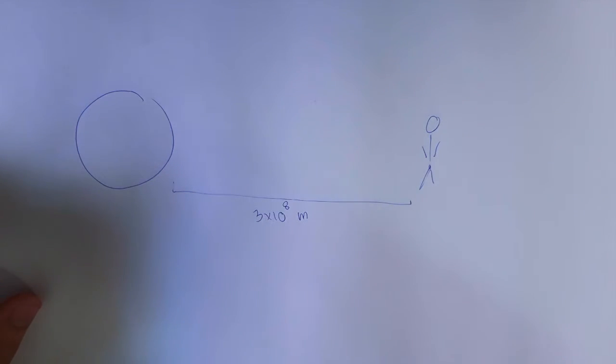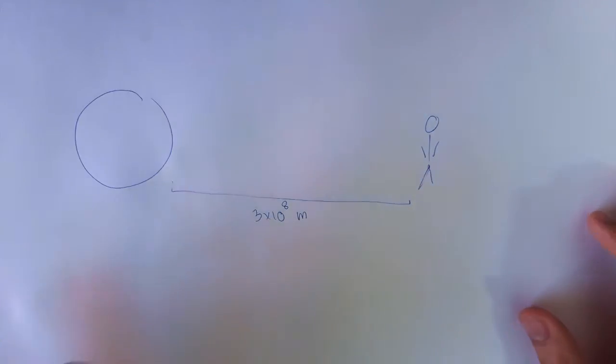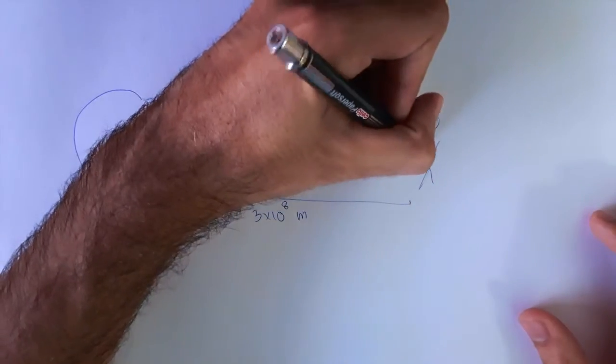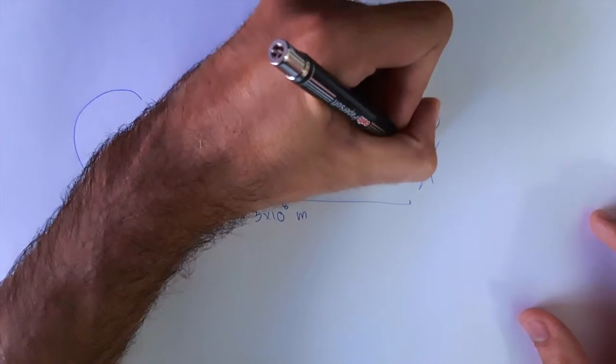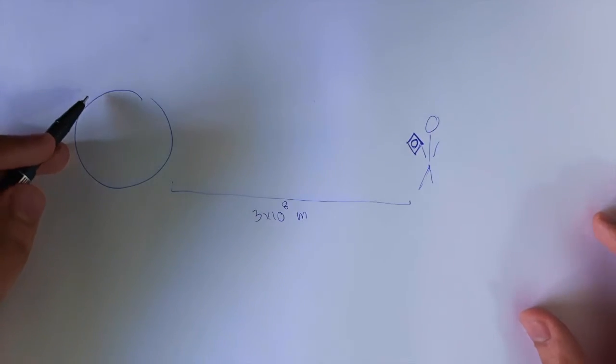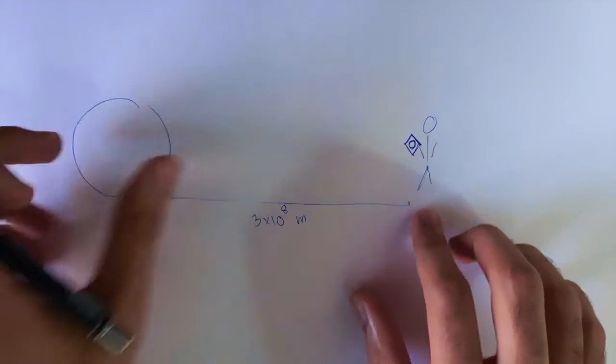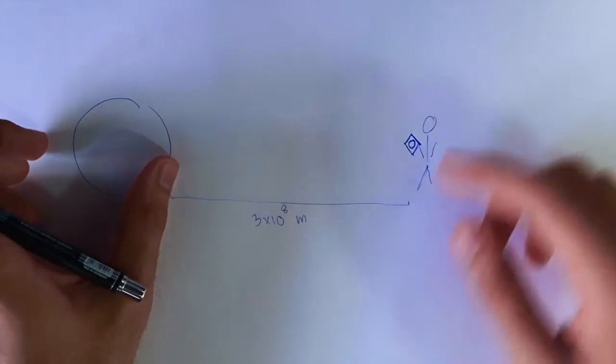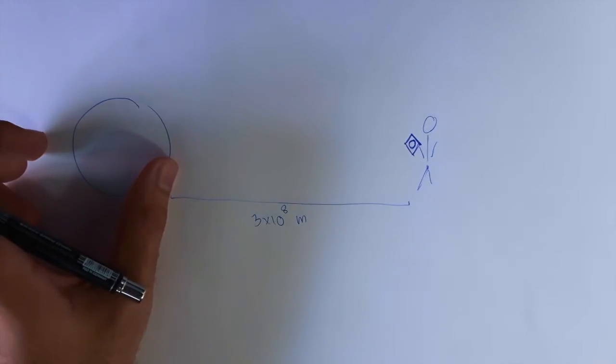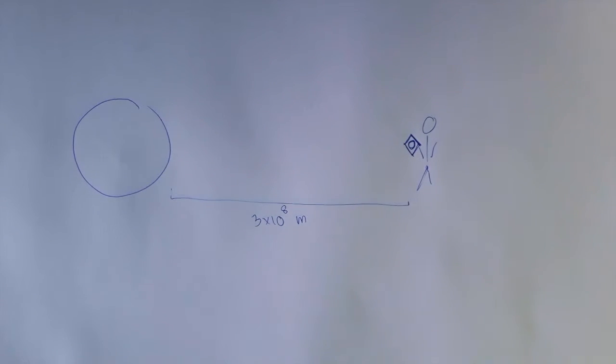But since gravity is acting instantaneously according to our assumption, I could hand you a sensor which senses the gravitational field from here, and we could program it such that when we move it, it turns out zeros and ones in binary code, and I could transmit information to you instantaneously.